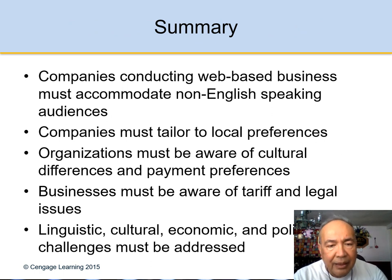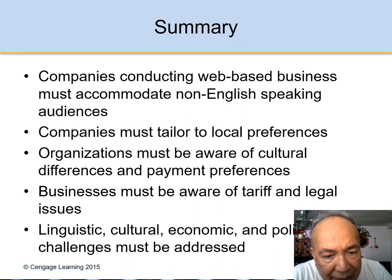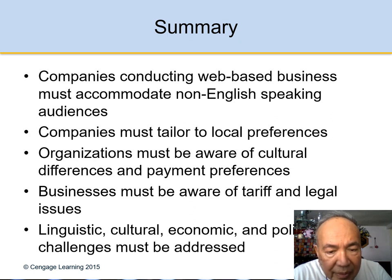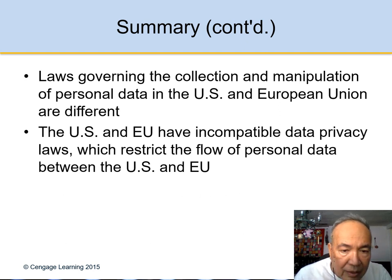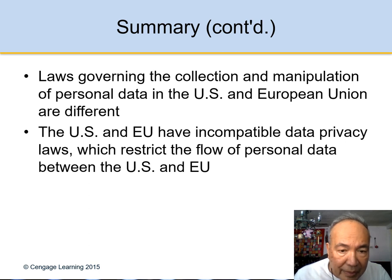Summary: companies conducting web business must accommodate non-English speaking audiences. Companies must tailor to local preferences — making sure to use local colors or displays. Organizations must be aware of cultural differences and payment preferences; in the United States it is always credit cards. Businesses must be aware of tariff and legal issues. Linguistic, cultural, economic, and political challenges must be addressed. Laws are different from country to country, and privacy laws vary greatly — in the United States we really protect privacy, but in other countries everybody knows everybody's business.